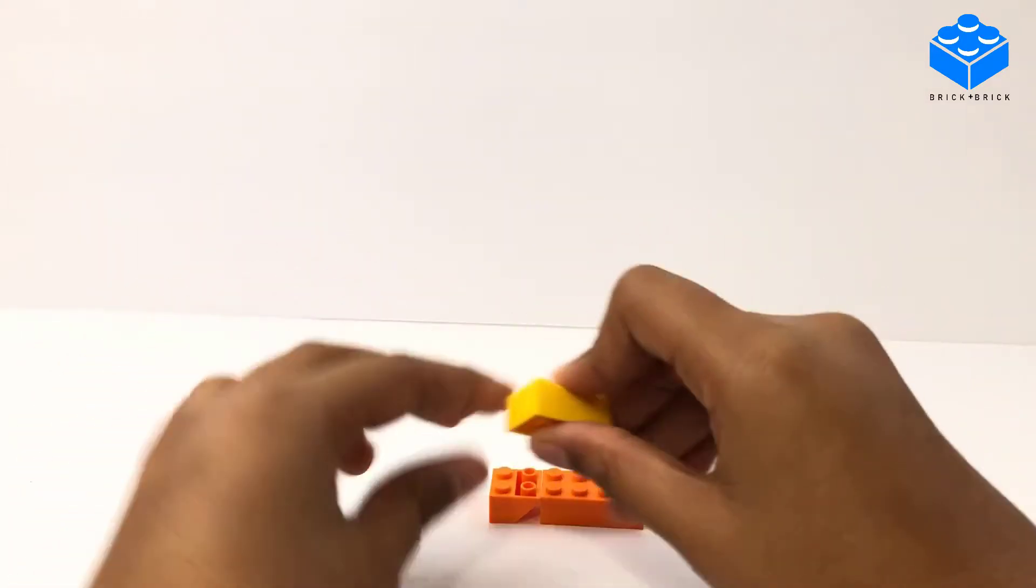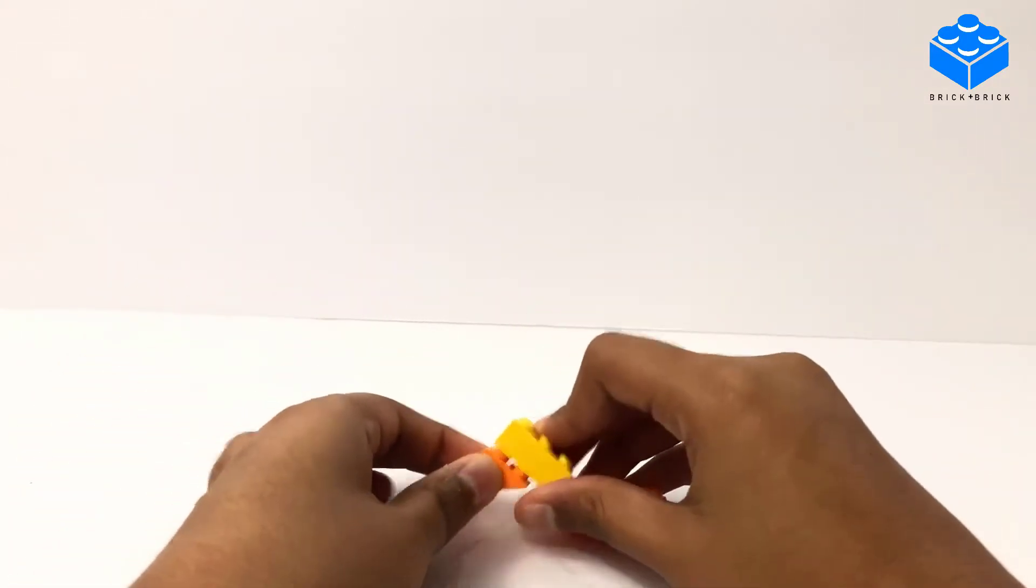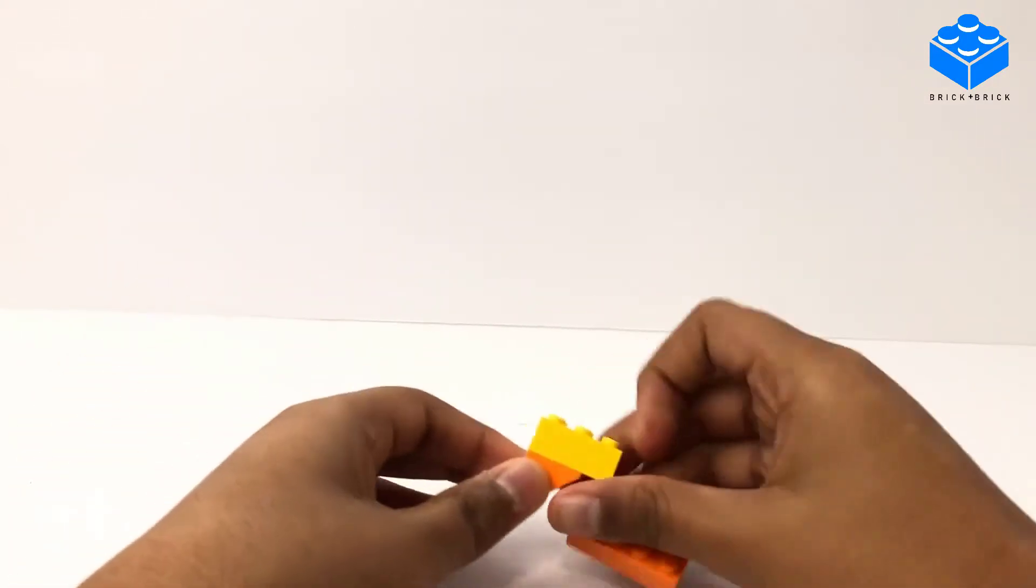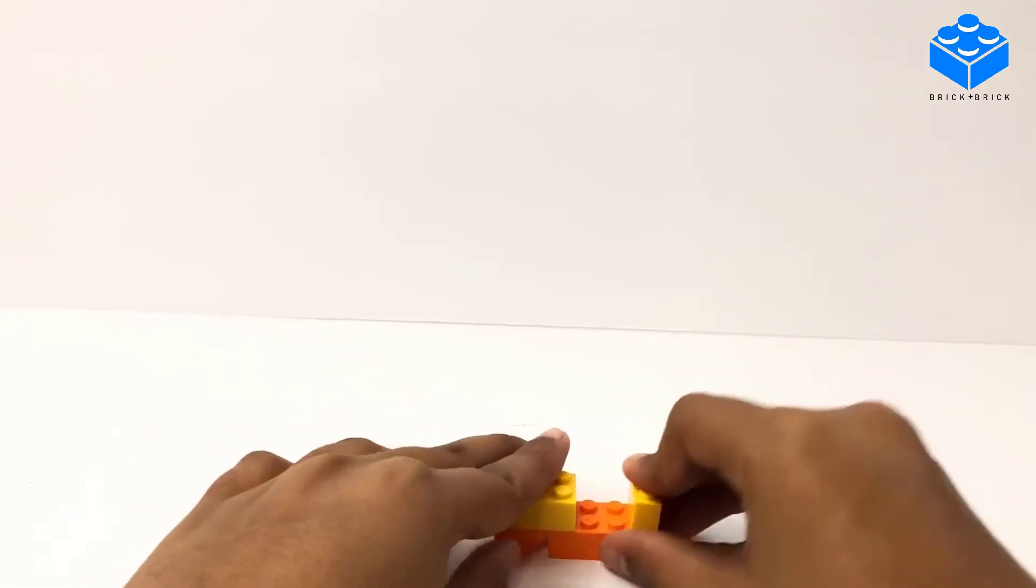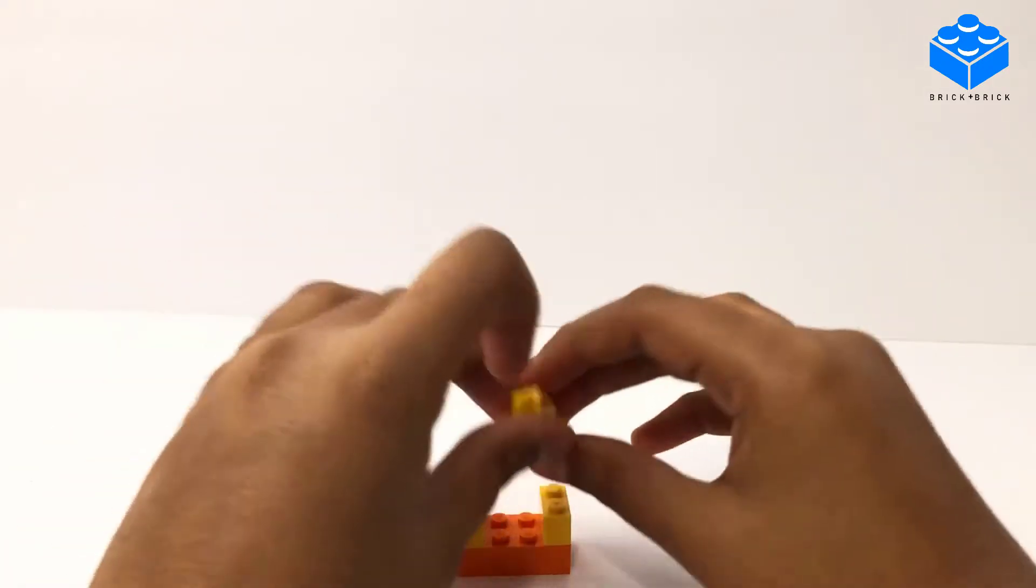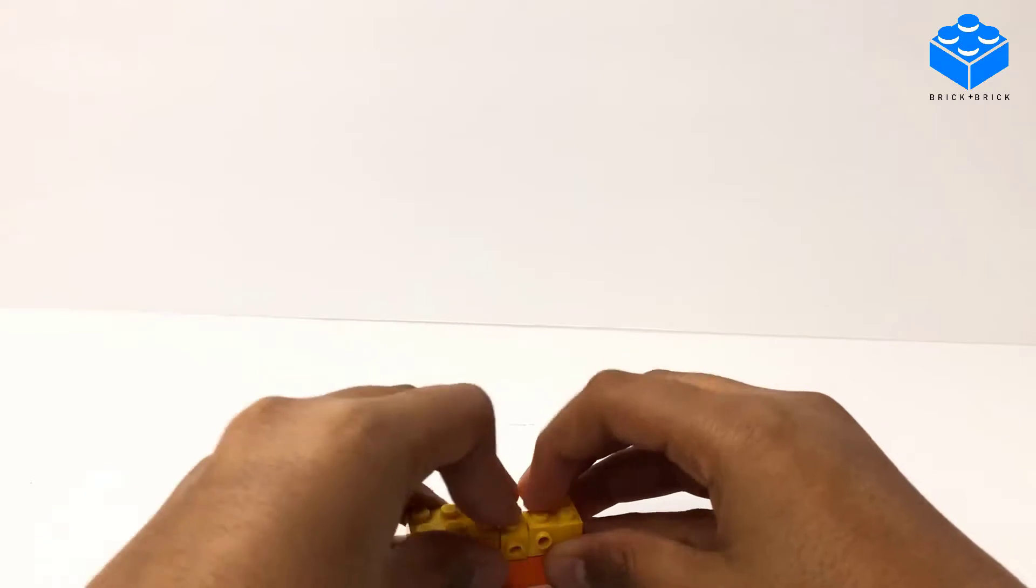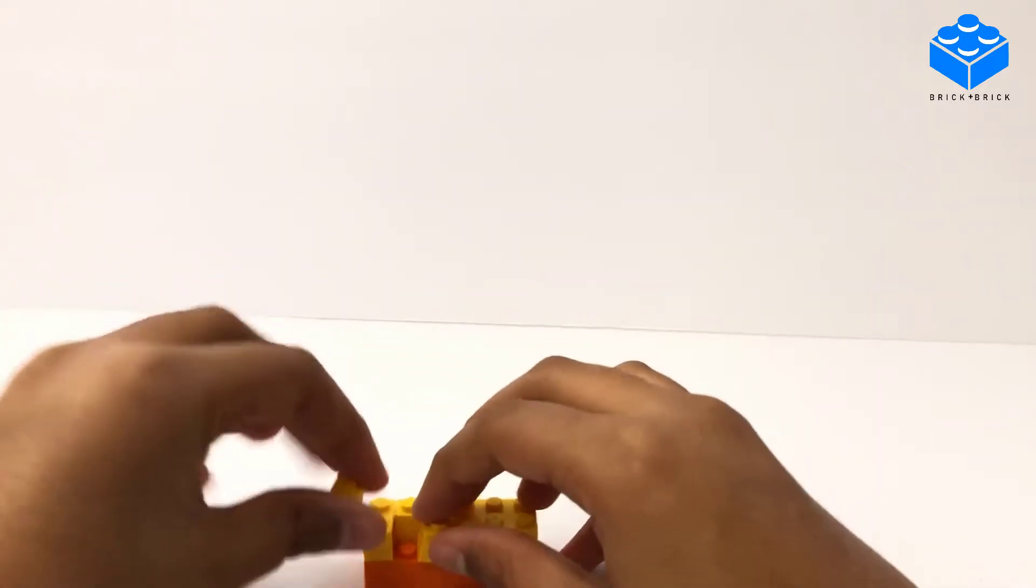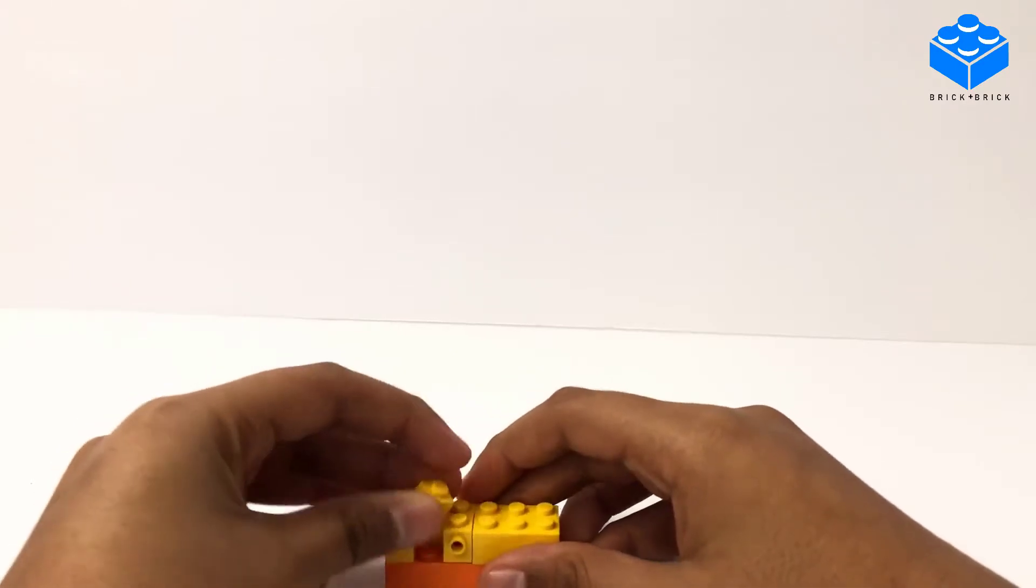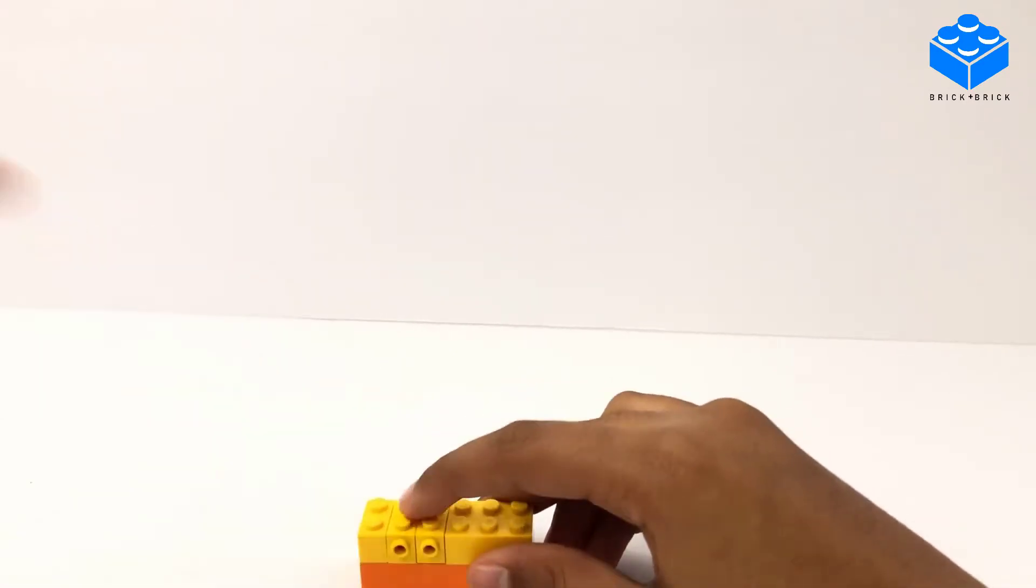Get the 2x3 piece and place it on the back. Then get the 1x2 and place it at the front. Then get your SNOT holes and place them on the sides like this.